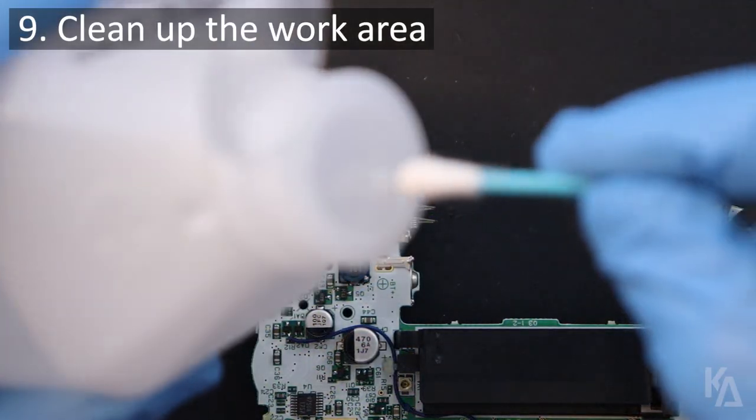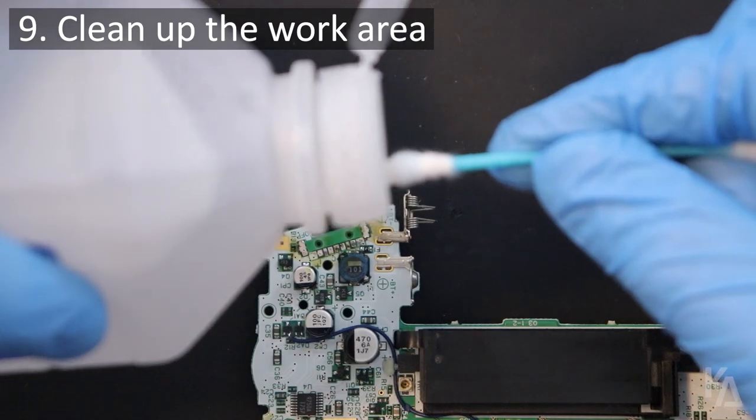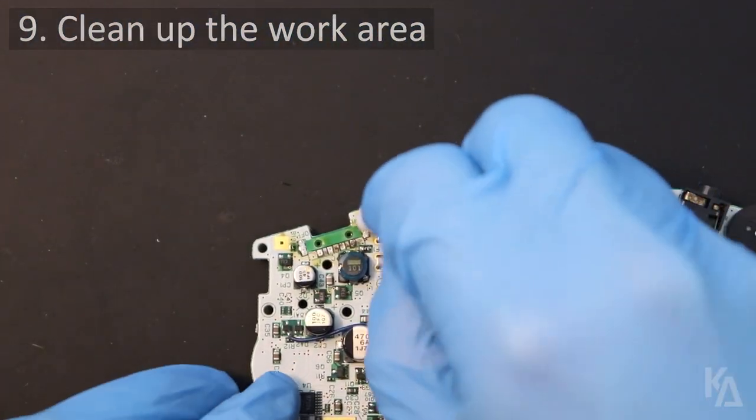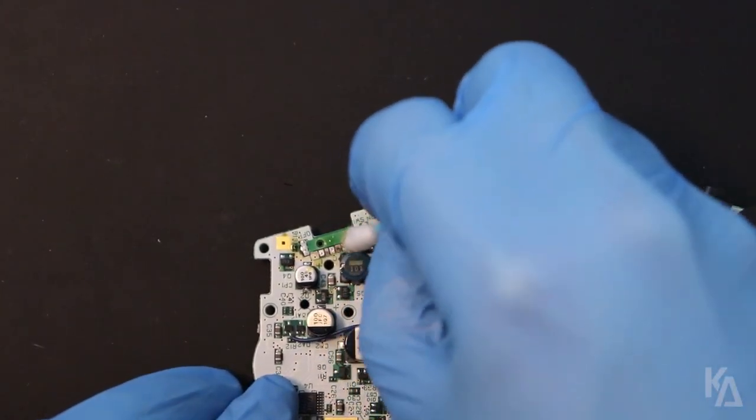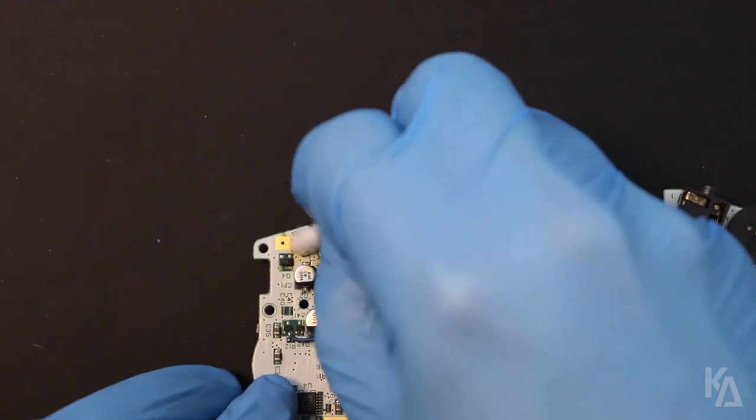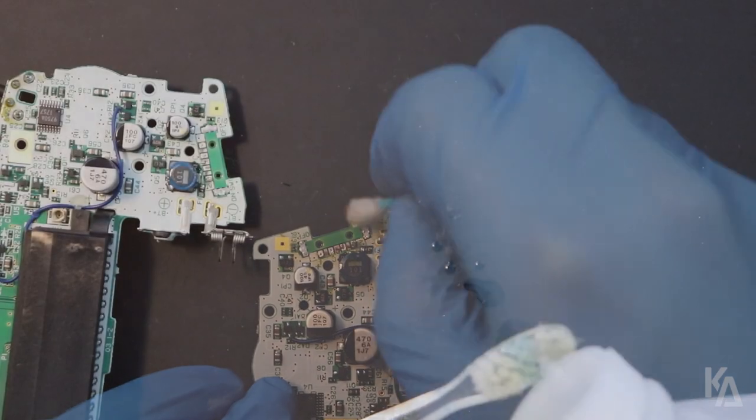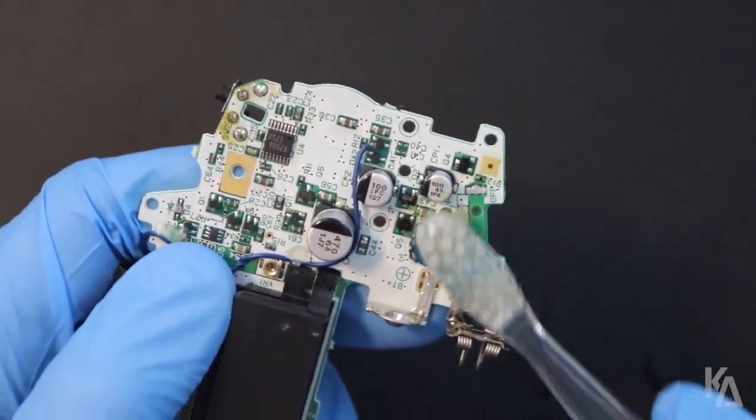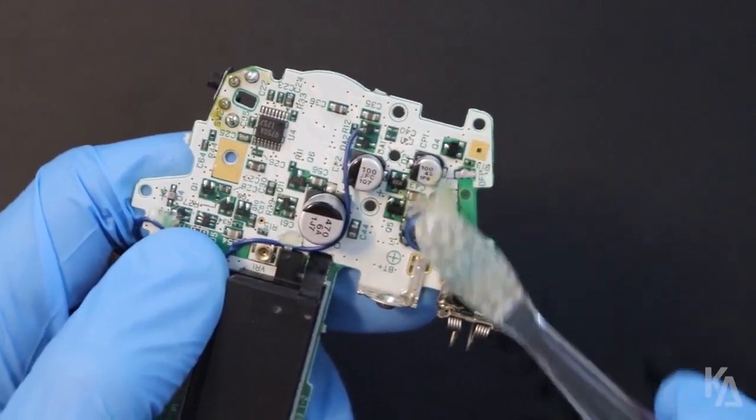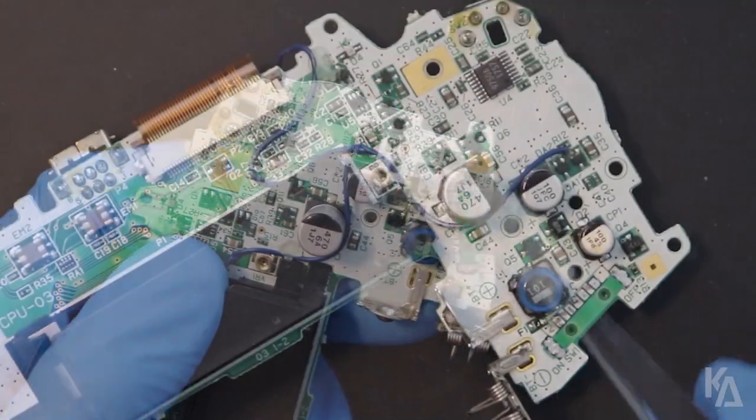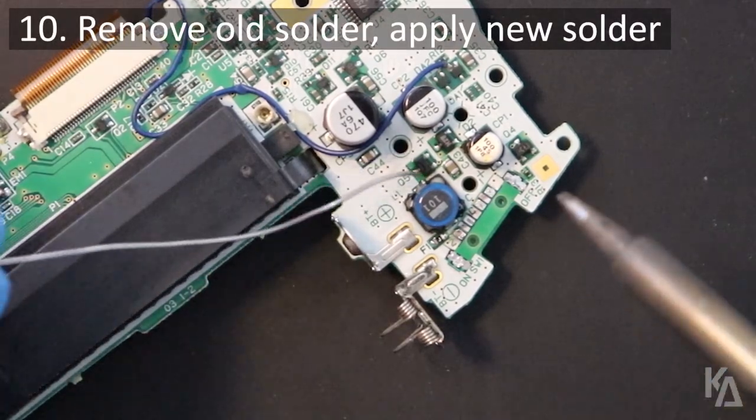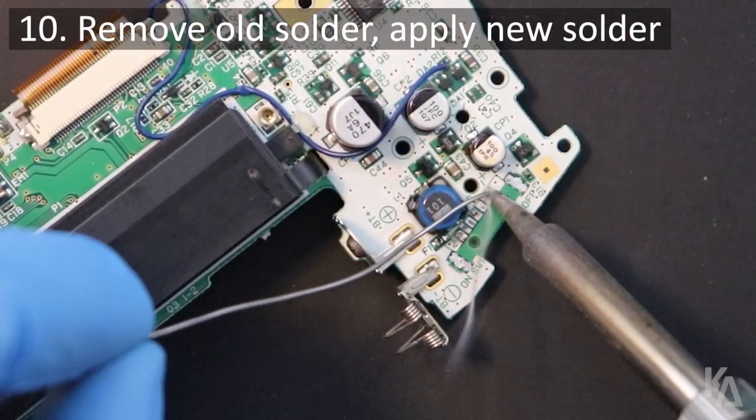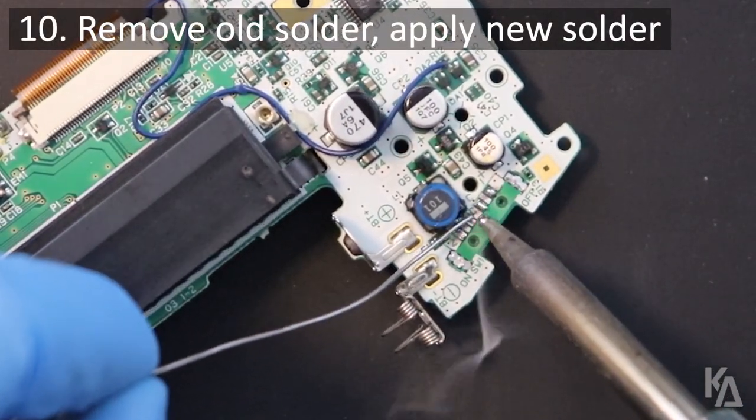With the old switch now removed, let's clean up our workspace and prep it for getting a new one. Use some rubbing alcohol and a cotton swab to clean up the leftover flux from the board. You can also use a toothbrush to help with this process. The bristles are a bit more abrasive but not rough enough to hurt anything. This also helps you get into a lot of tight spots. After the alcohol evaporates, take some time to remove old solder and apply new solder to the pads on the board.